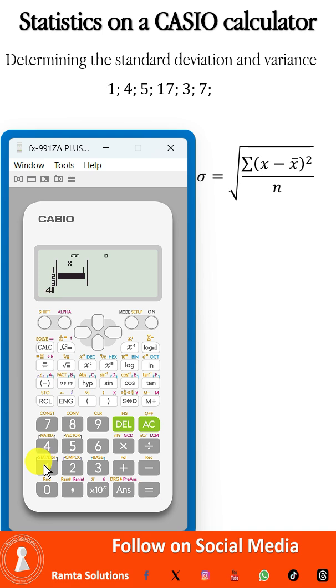And we follow it by saying 4 equal to, 5 equal to, 17 equal to, 3 equal to, 7 equal to.